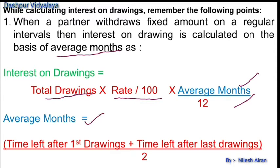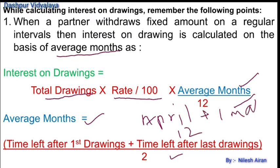Average months are calculated as: time left after first drawing plus time left after last drawing, divided by 2. For example, if a partner withdraws rupees 1000 at the beginning of each month, the first drawing in April leaves 12 months and the last drawing on 1st March leaves 1 month. So average months = (12 + 1) / 2 = 6.5 months.